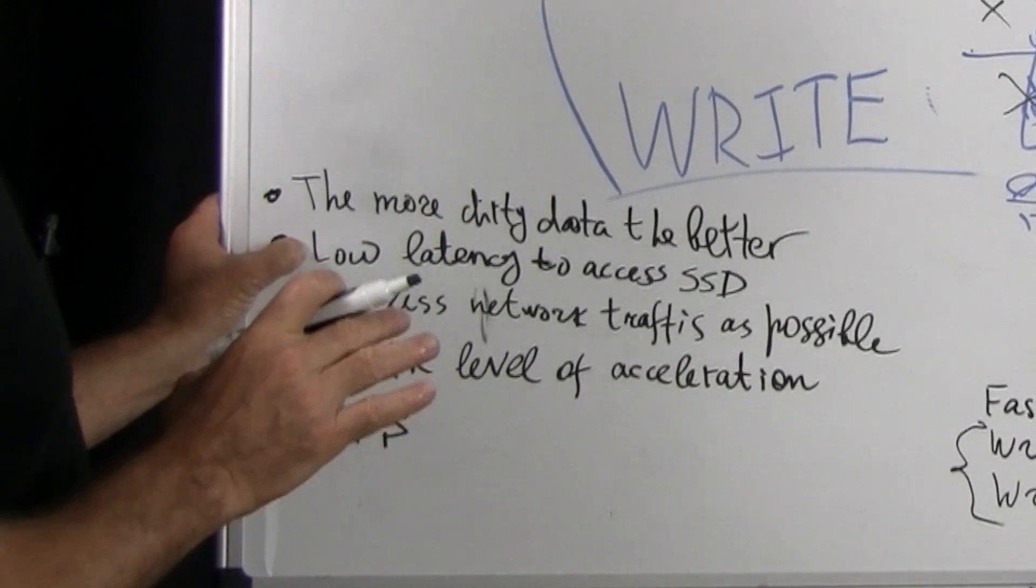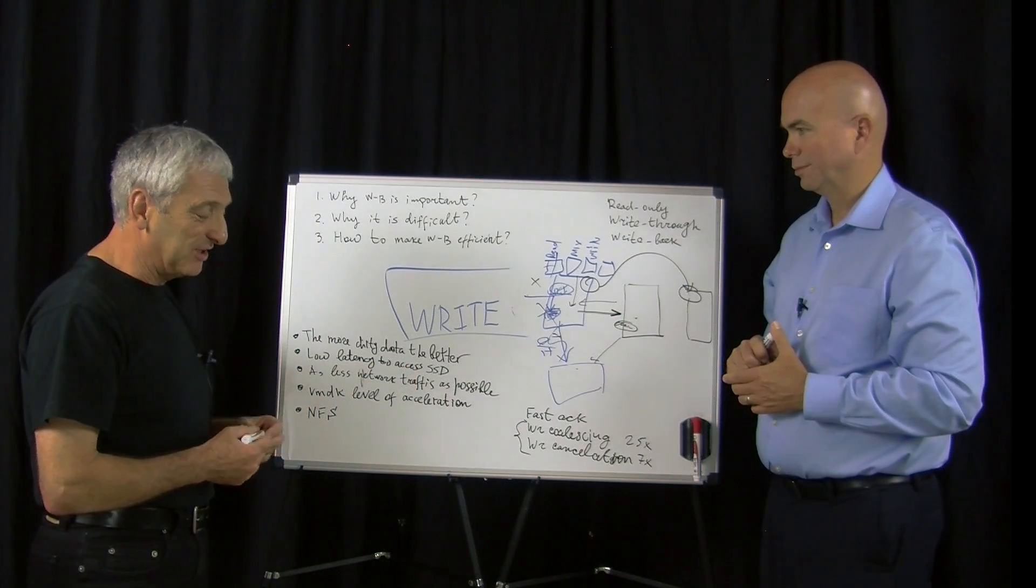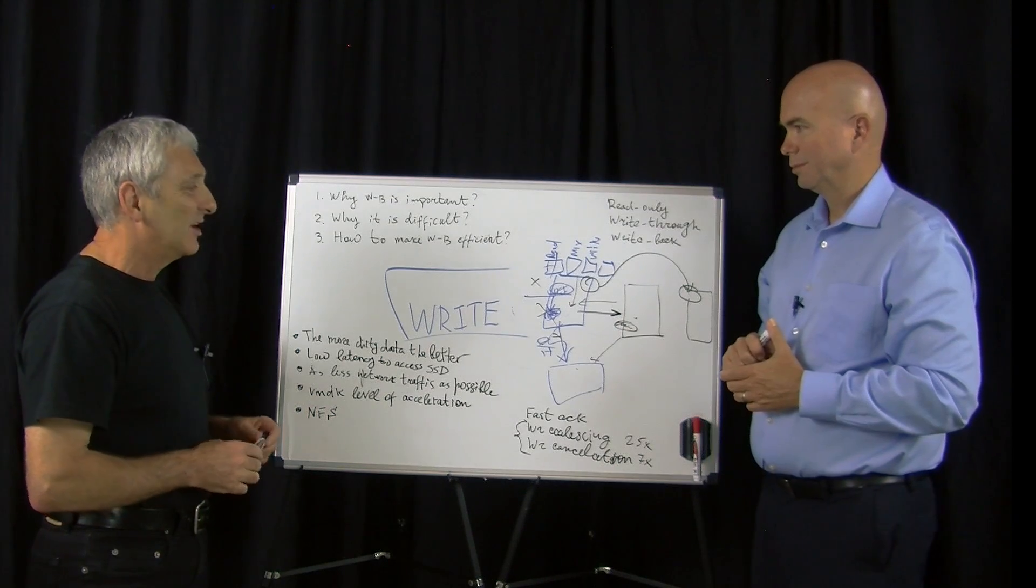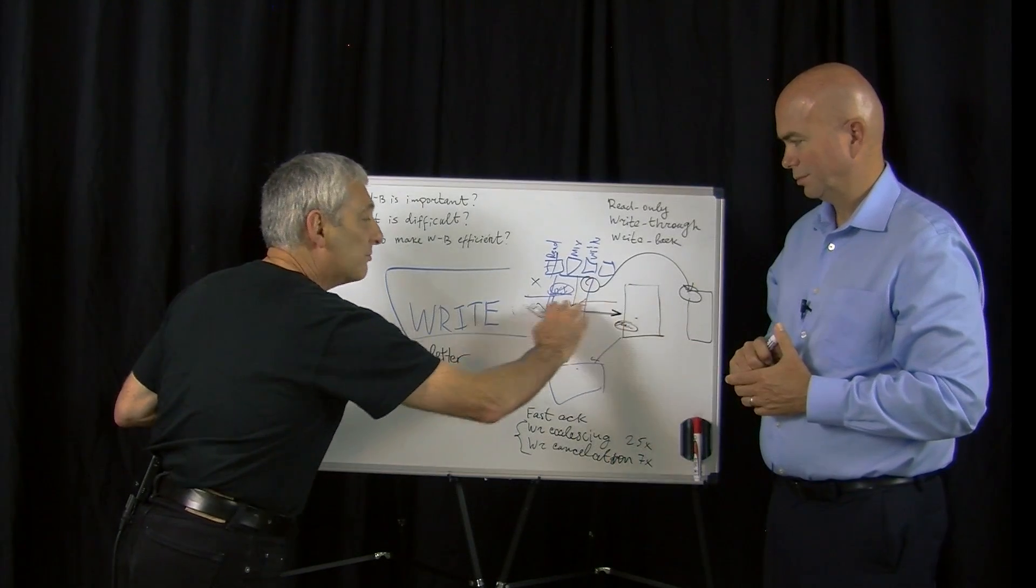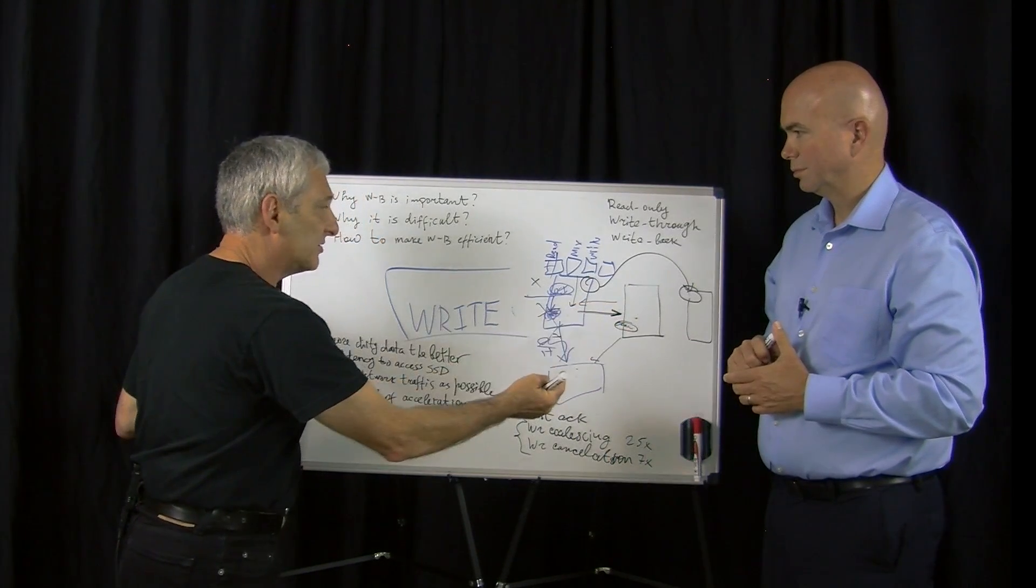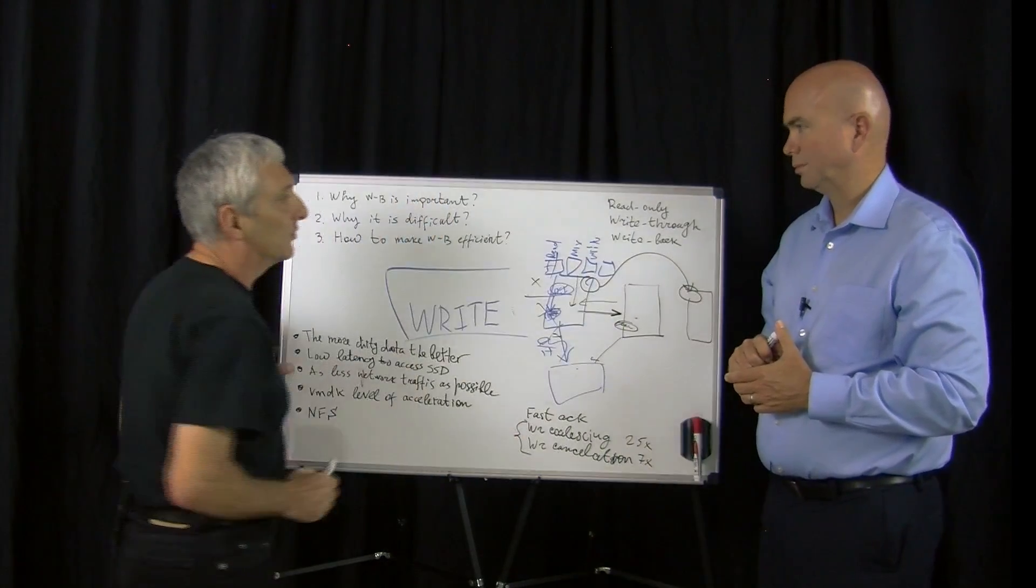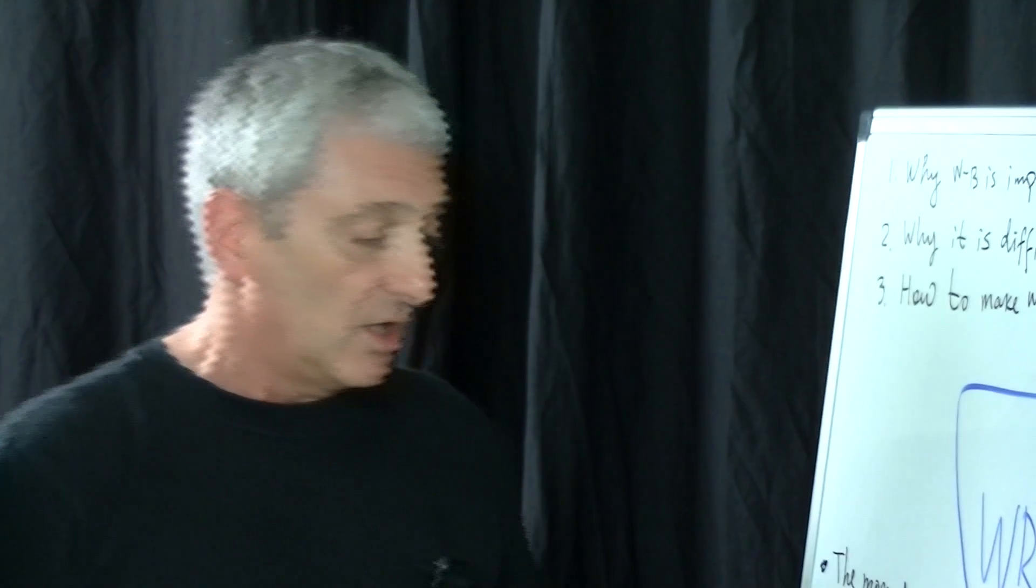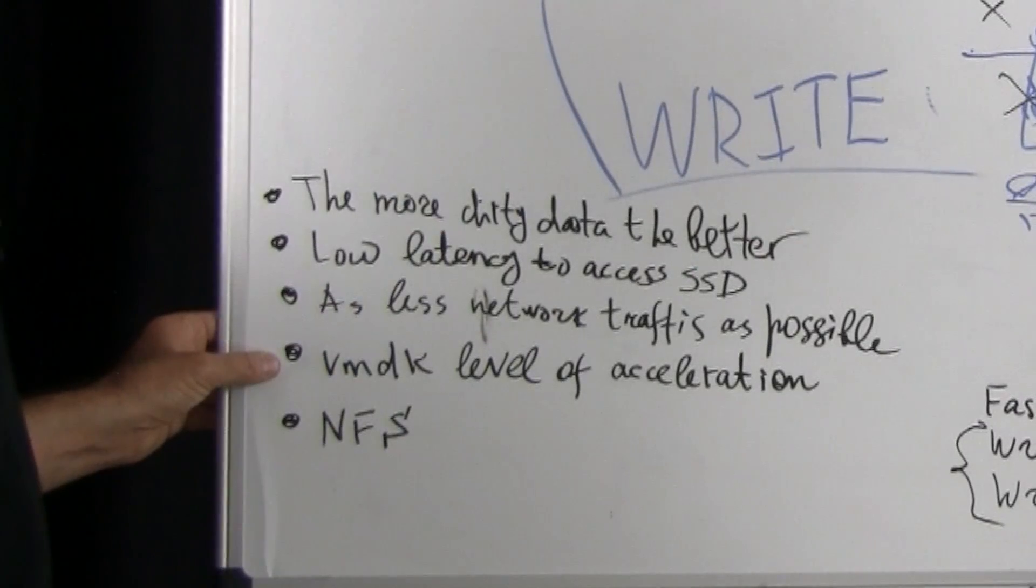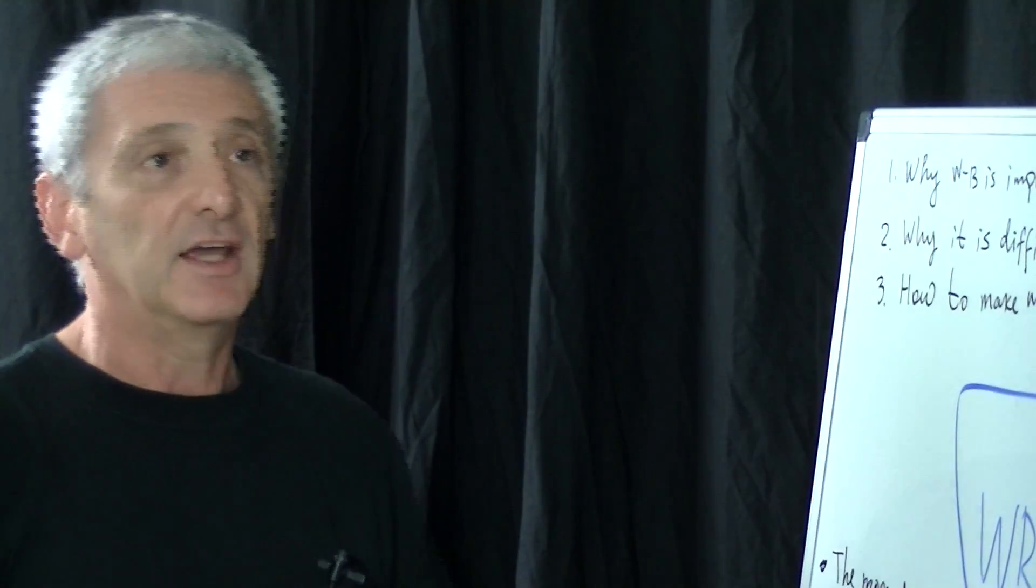And that's reason number one. Reason number two: requirements for write-back. Low latency access to SSD - if SSD can't handle reads or writes in tens of microseconds, I don't want to spend in the software 100 microseconds. As less network traffic as possible - we replicate already between hosts and this is network traffic, but when vMotion happens, we can but we don't want to use network for replication because software stack and TCP/IP is very heavy. The VMDK level of acceleration is very important for snapshot support for VDI, and finally it is very important to support NFS, so SAN and NAS must be supported, and this is also something special for write-back.